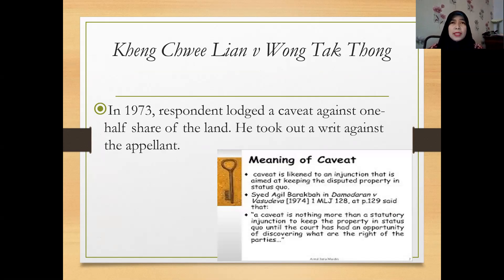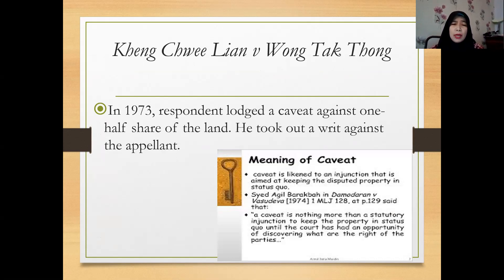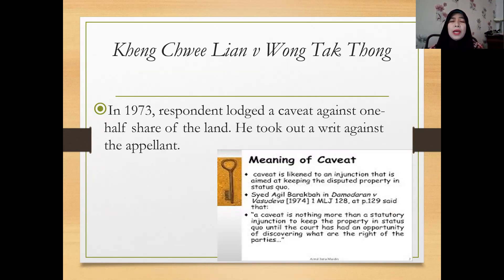In 1973, the respondent lodged a caveat against one half share of the land. A caveat is essentially an order from the court, similar to an injunction, preventing any transaction over the land. He then took out a writ against the appellant because he wanted to claim his portion over the land.